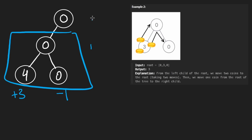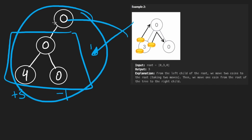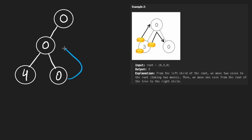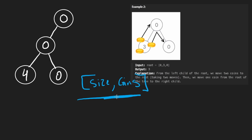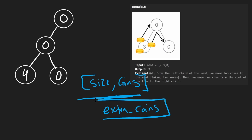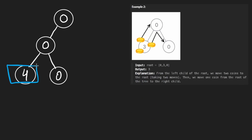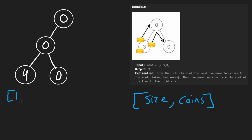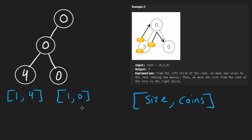I'm going to show you the final solution. It returns two values from each node: the size of the tree and the number of coins in each subtree. There is a way to do this with just a single return value — returning the number of extra coins — which is slightly more optimized. But conceptually, returning size and coins is easier to understand. Base case: the size of a leaf is one and the number of coins is whatever it holds. With this information we can calculate the number of extra coins at each step.